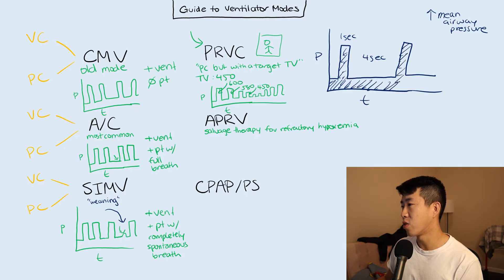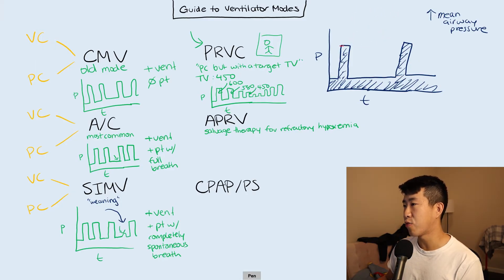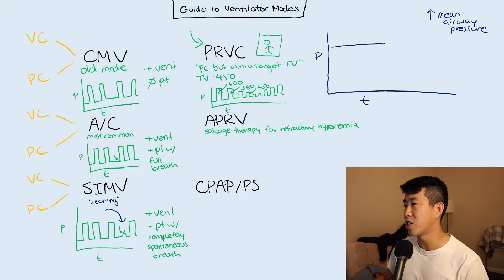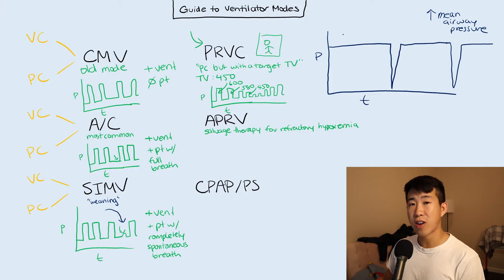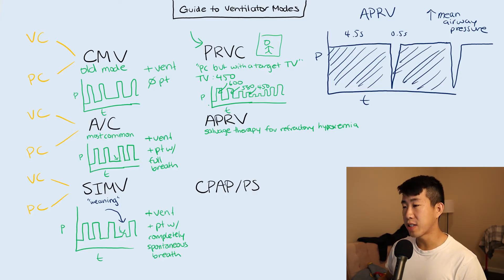To extend the mean airway pressure, we can change the I to E ratio — giving longer inspirations and shorter expirations. Say this becomes three seconds inspiration to three seconds expiration — that gets us toward a mode called BiLevel. Going even further, we extend to a near-continuous inspiration for the full time period with just a really short release breath, then keep it at the same high level again. So the I to E time becomes something like 4.5 seconds to 0.5 seconds — this is what we're calling APRV. Think of it as continuous positive airway pressure with release breaths, or a huge prolonged inspiration with a very quick pressure release.